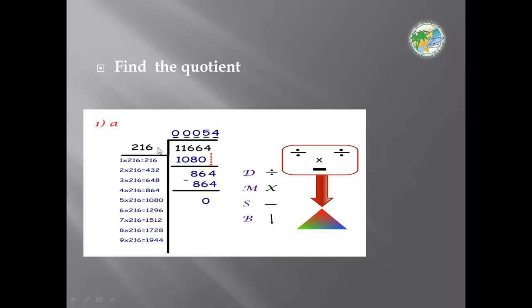Before starting, write the steps of draft of divisor. What is draft of divisor? Draft of divisor means we make a timetable for 216, one time until nine times.